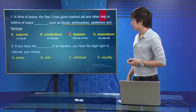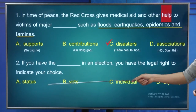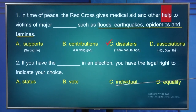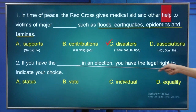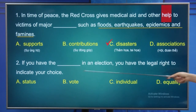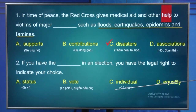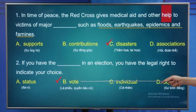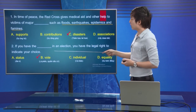Number 2: If you have something in an election, you have the legal right to show your choice. The four options are: status, vote, individual, and equality. The answer for Number 2 is B - Vote, meaning a ballot or the right to vote. So if you have a vote in an election, you have the legal right to express your choice.